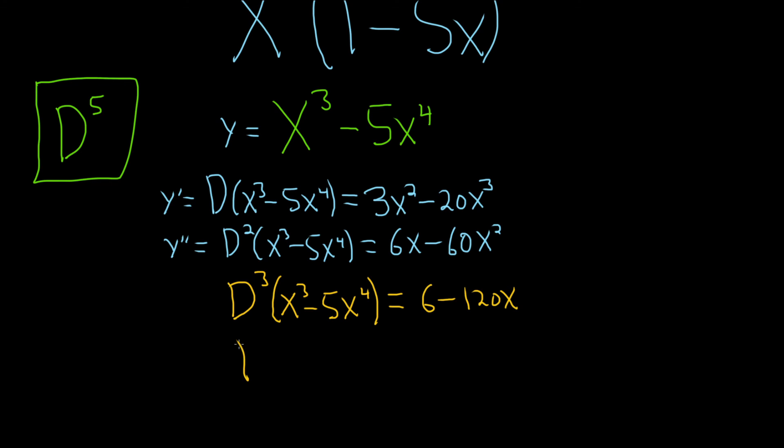Getting there, D to the fourth, x cubed minus 5x to the fourth. And that's just derivative of 6 is 0, and then here we just get negative 120.